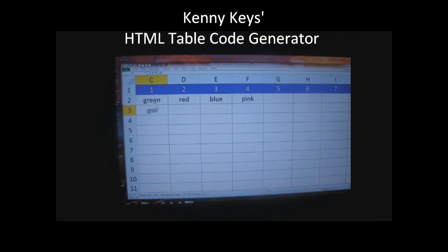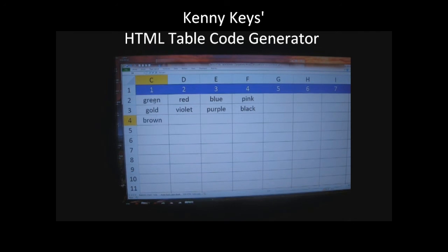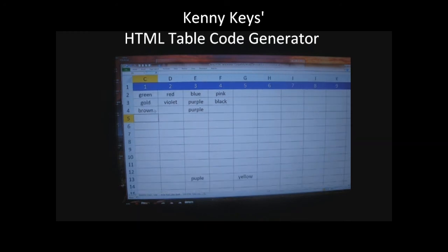The next line, I want the very first column to be gold, then violet, purple, and black. The third line: brown, and then skip a space, and then purple.